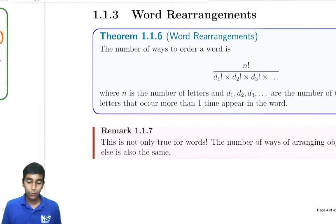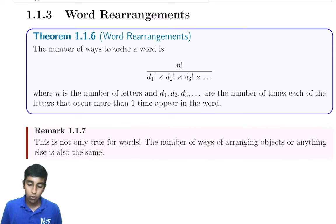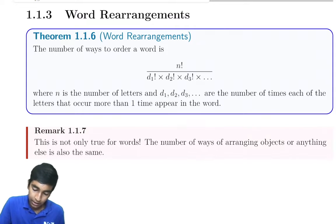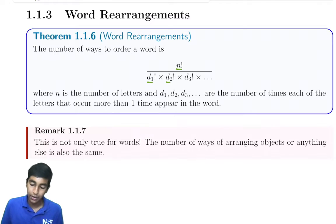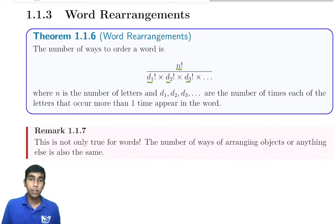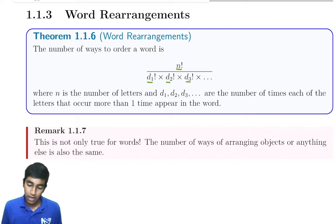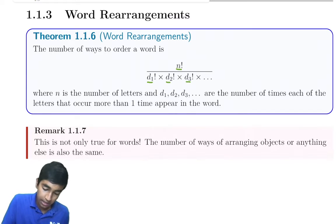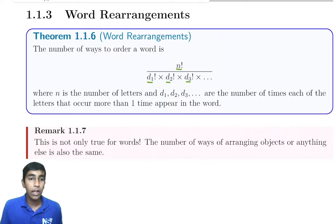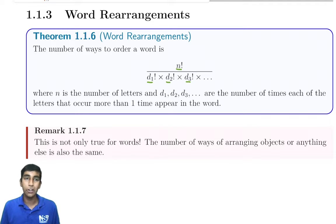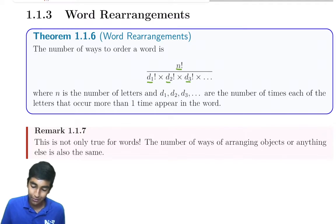Now let's move on to word rearrangements. The number of ways to order a word is n factorial, where n is the number of letters, divided by the factorial of the number of duplicates of each letter. Importantly, this is not only true for words — the number of ways of arranging any objects is also the same, and there are some clever applications using this formula.